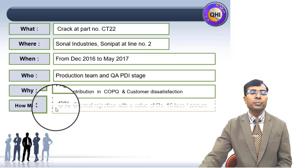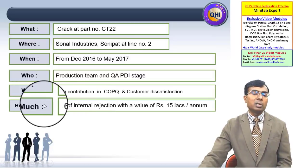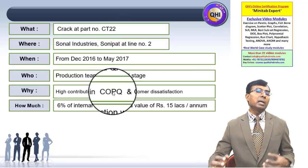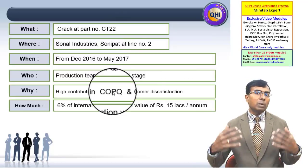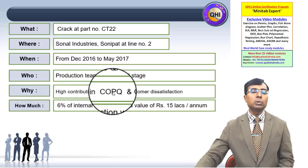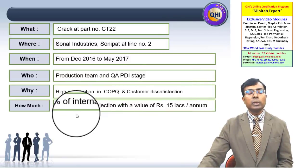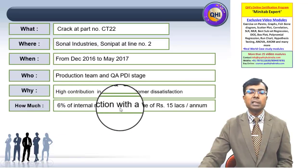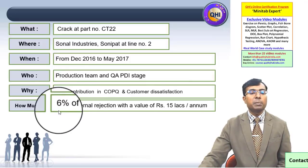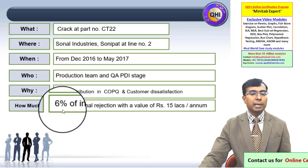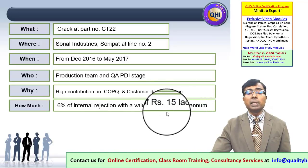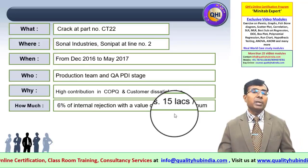The last element is How Much — the quantification, which is very important. Until we quantify things in terms of money and understand the financial impact of the problem, it will be very difficult for the team leader and management to assess whether the project is relevant, because management understands the language of money. Here, the data shows 6% internal rejection with a value of rupees 15 lakhs per annum — clearly quantified both as a percentage and in monetary terms. The organization is losing this much money, which is severely impacting them.